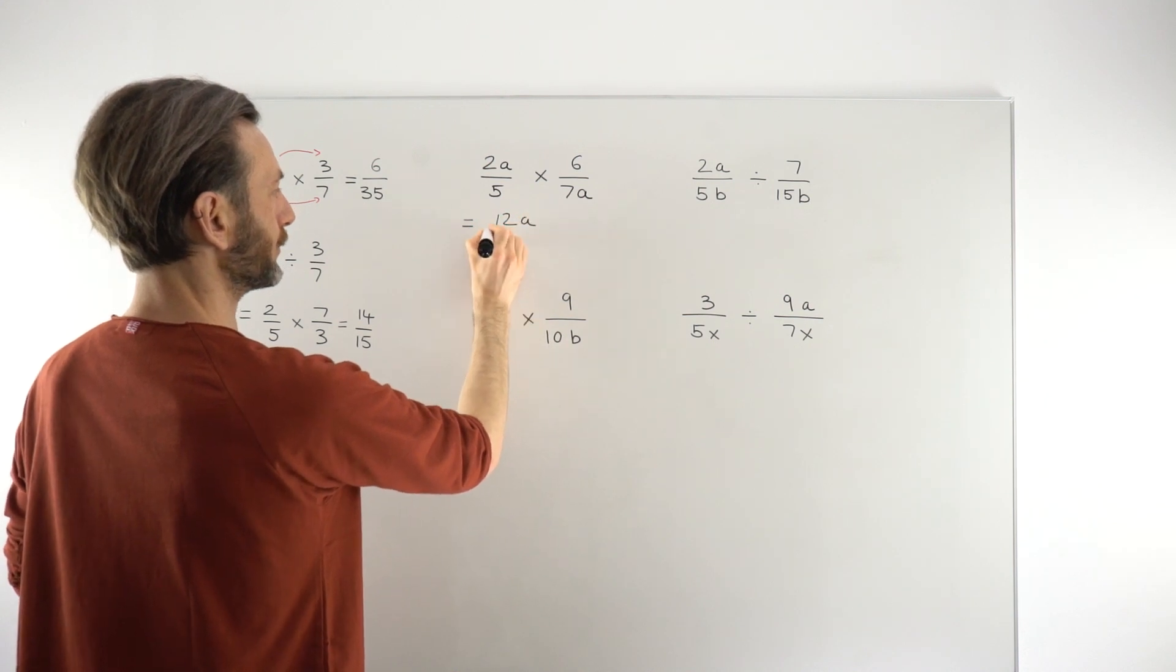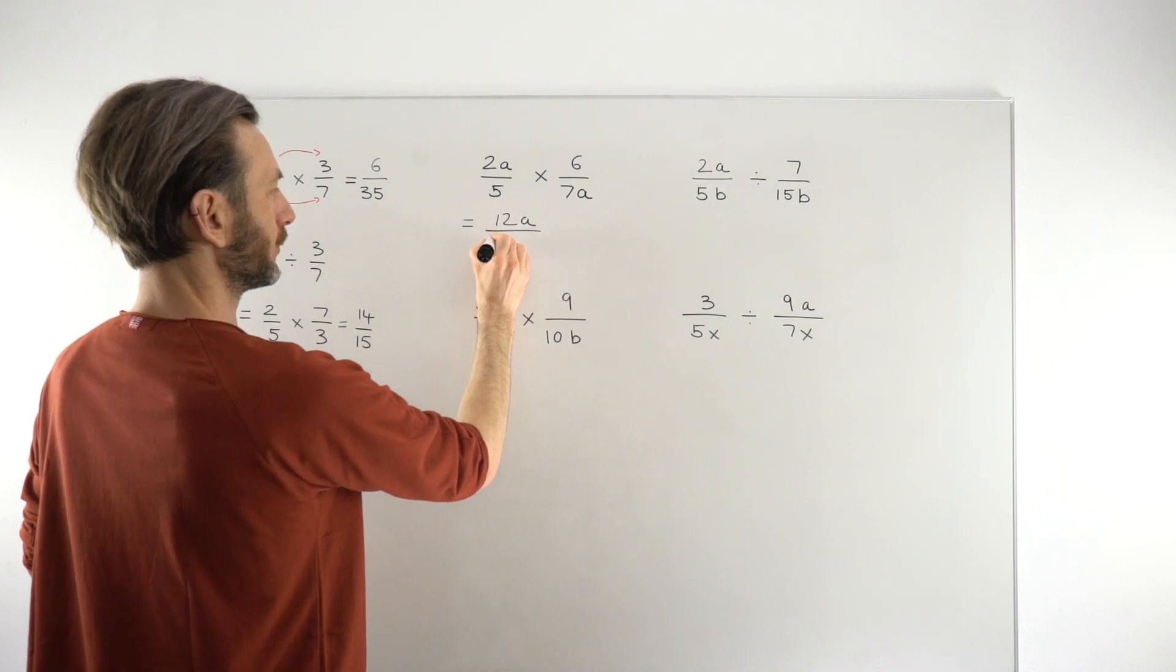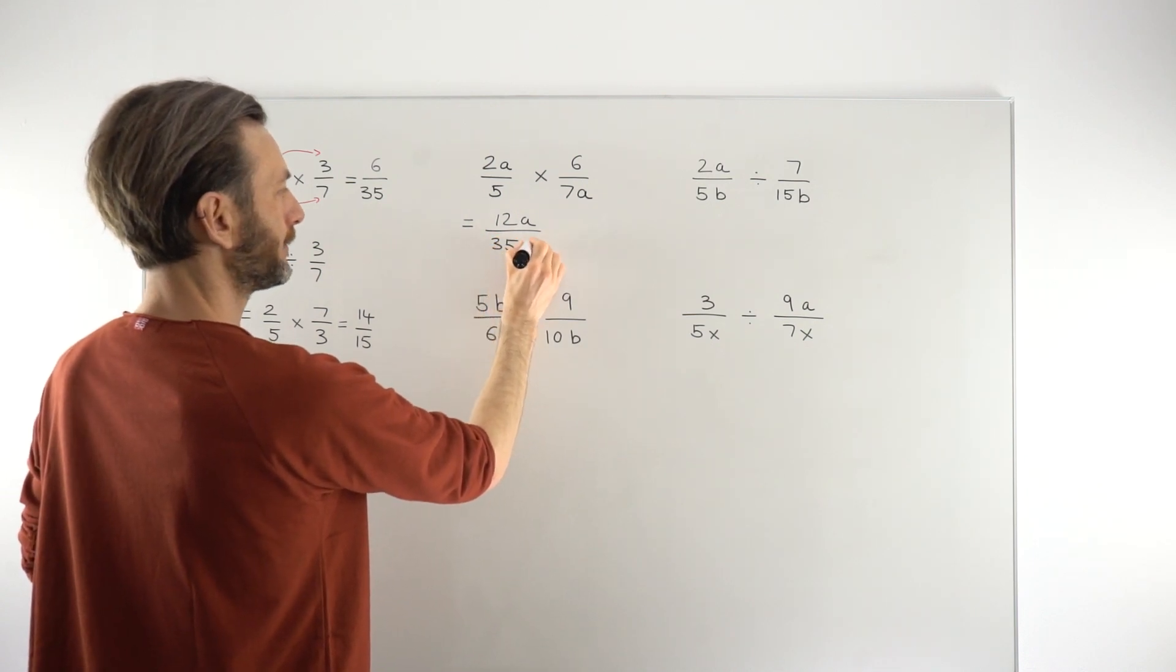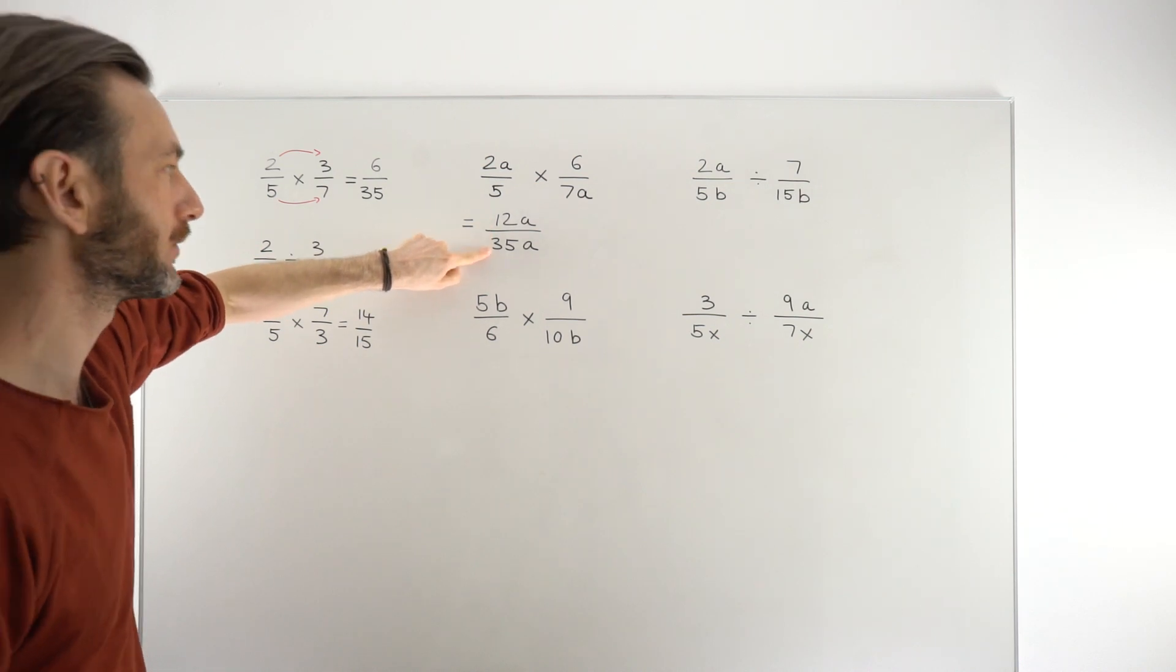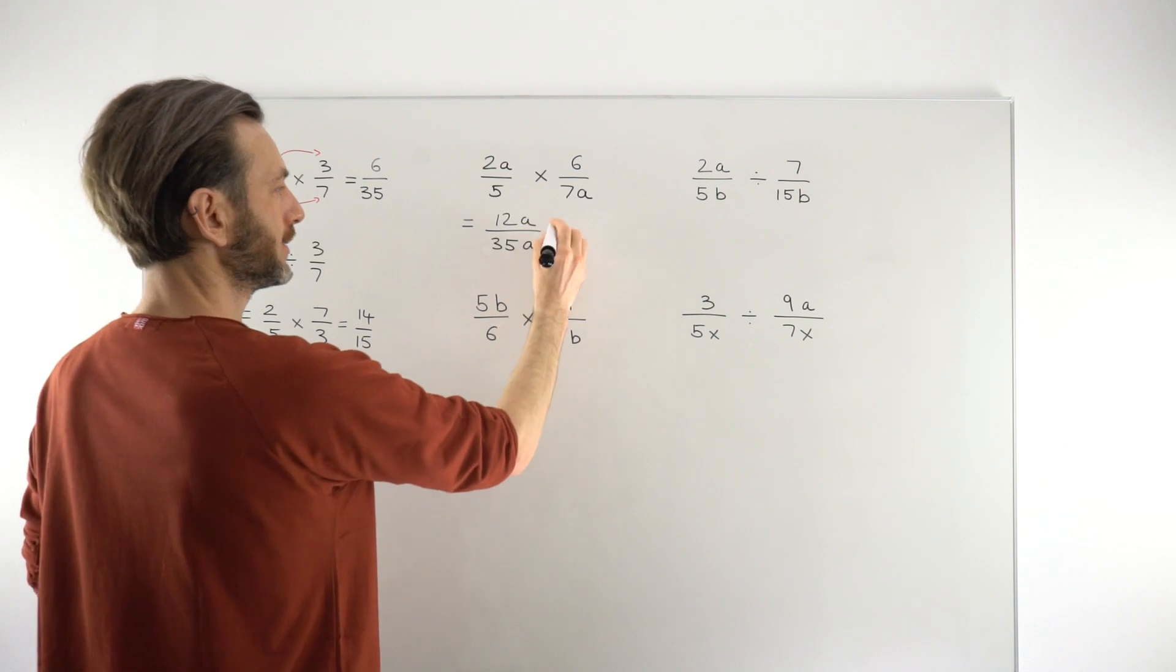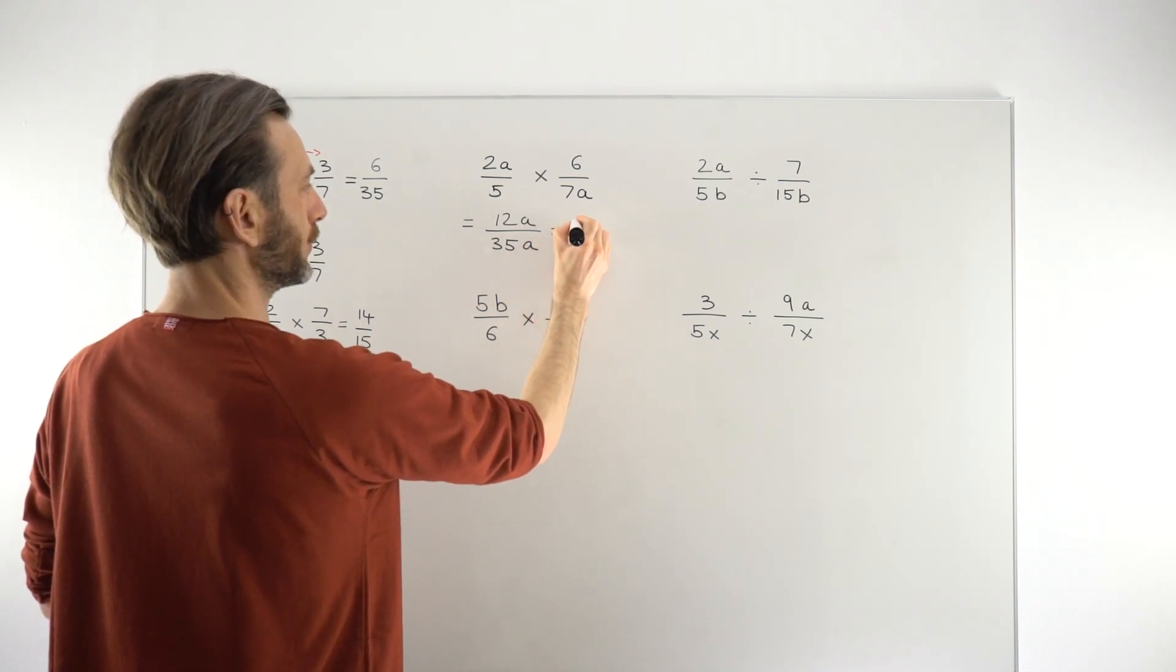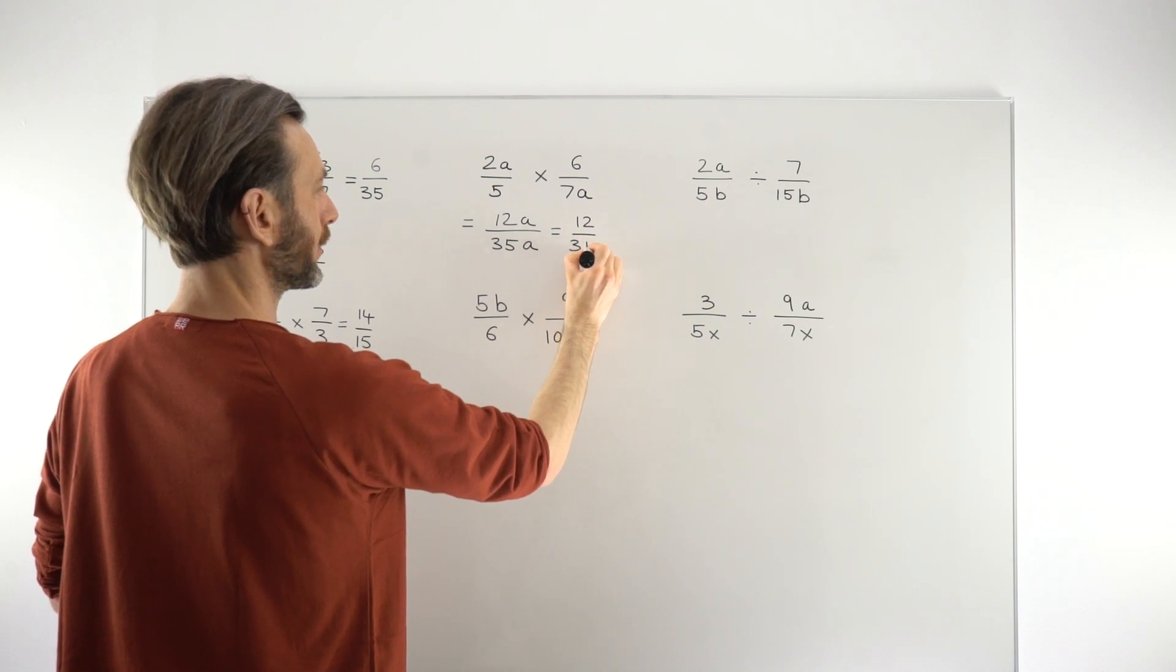and then we've got 5 times 7a on the denominator, so that's going to be 35a. So looking at our number terms, there's no common factor there. Nope, no common factor, so they're fine. We can divide top and bottom by a to get rid of the a's, basically, and end up with 12 over 35.